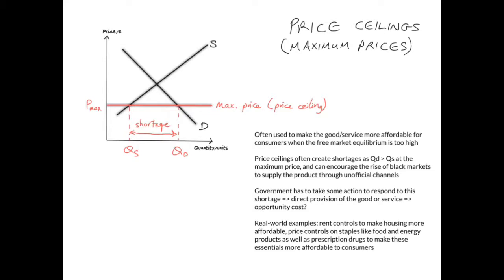Let's start with the diagram for price ceilings, also known as maximum prices. A price ceiling is a maximum price set when the equilibrium price of a product is too high — the government legislates that the price cannot be higher than this ceiling. It's often used to make goods or services more affordable for consumers. Price ceilings often create shortages because quantity demanded ends up being greater than quantity supplied — QD is greater than QS.